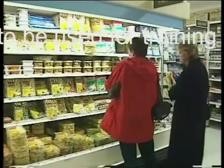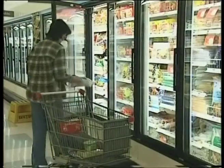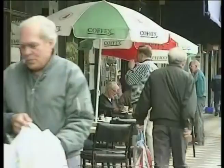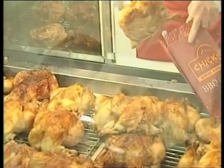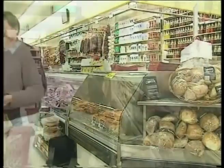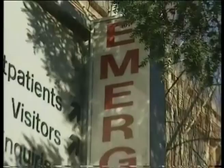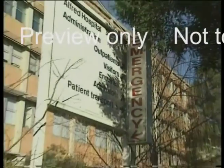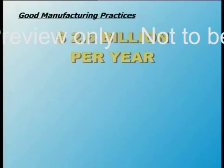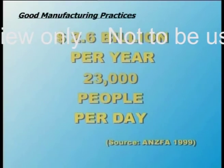Today, more than ever before, people rely on mass-produced and manufactured foods. But food manufacturing and processing is not risk-free. Adulterated or contaminated food can cause food poisoning, which in its most severe form can be fatal. Food poisoning costs Australia an estimated $2.6 billion a year, and food-borne illnesses may affect as many as 23,000 people a day.